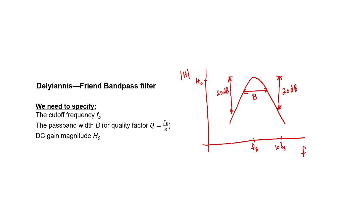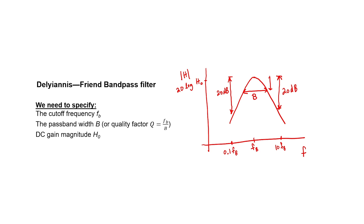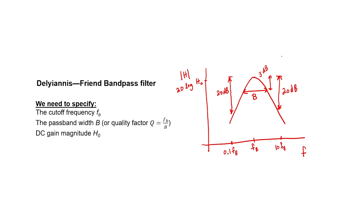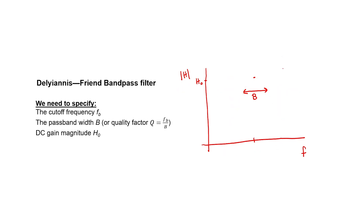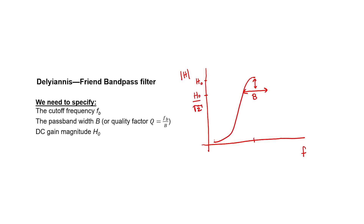If I'm plotting on a logarithmic scale, then this should actually be 20 log times the DC gain. The passband is defined as being 3 dB down from the center of the filter. On a linear scale, 3 dB corresponds to half of the power at the center, which corresponds to 1 over the square root of 2 times the voltage — so this is 0.707 times H0.